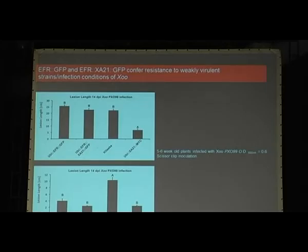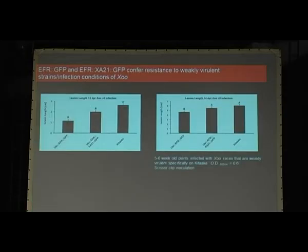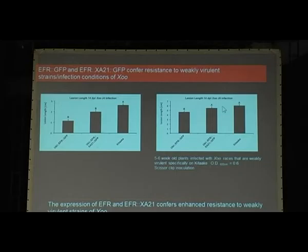We wanted to confirm this with several other different races of XO. We tested several strains from our collection and found two more strains which showed very reduced virulence on Kitaake. Again, if you express either EFR or EFR-XA21, you show a slightly reduced lesion length. The same is for this other Japanese race. So yes, it works. It's not an amazing phenotype, but you definitely see a phenotype if you express EFR or EFR-XA21 in rice. These plants are slightly more resistant to XO.